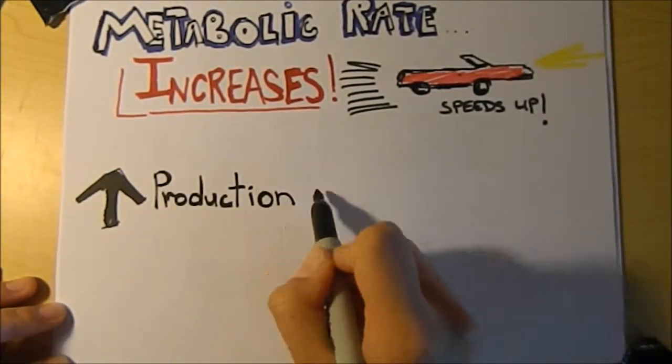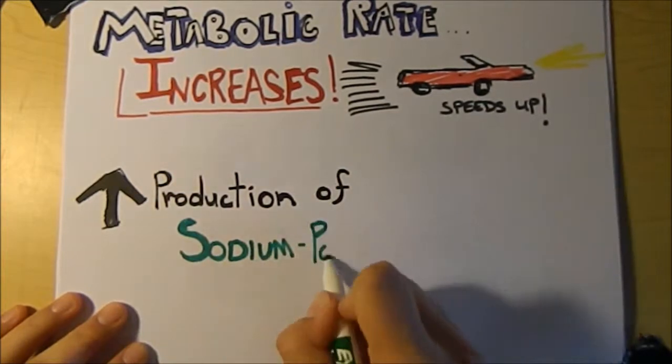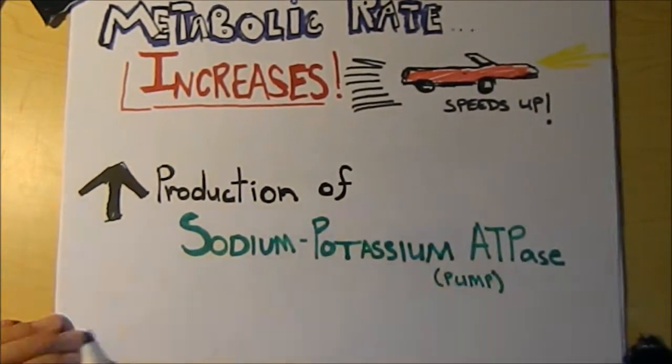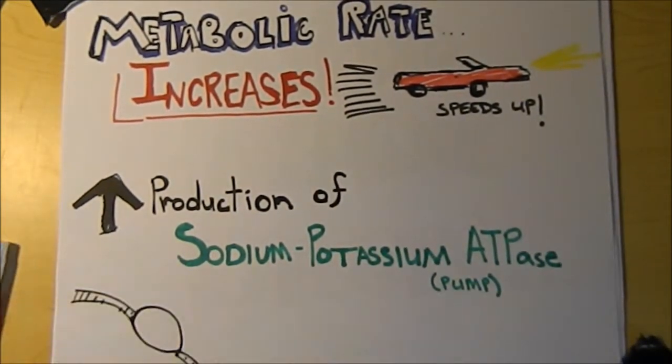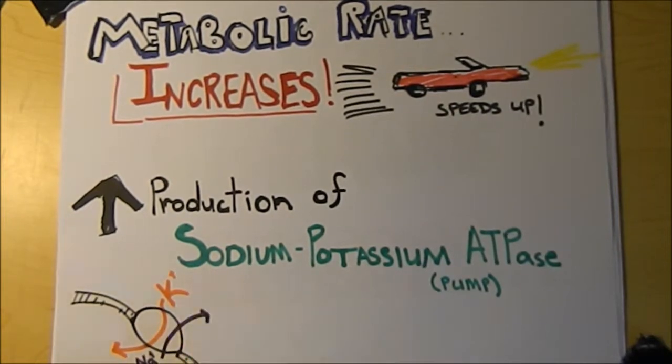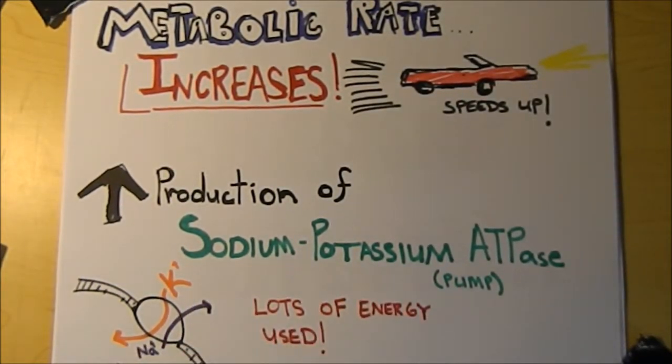This hormone also increases the production of sodium-potassium ATPase, or the sodium-potassium pump. With this, more potassium ions are pumped into the cells while sodium ions are pumped out. This uses a lot of energy.